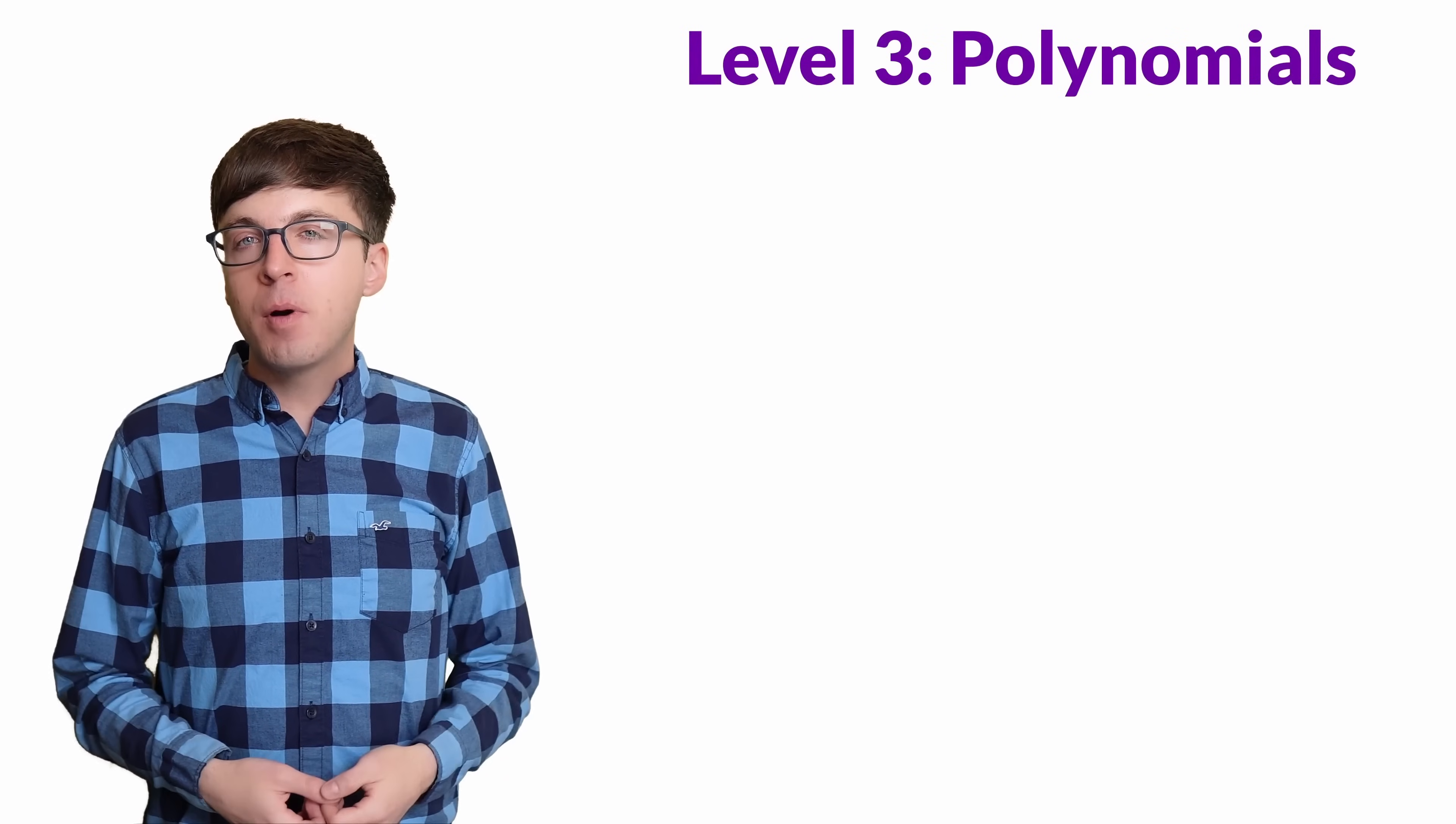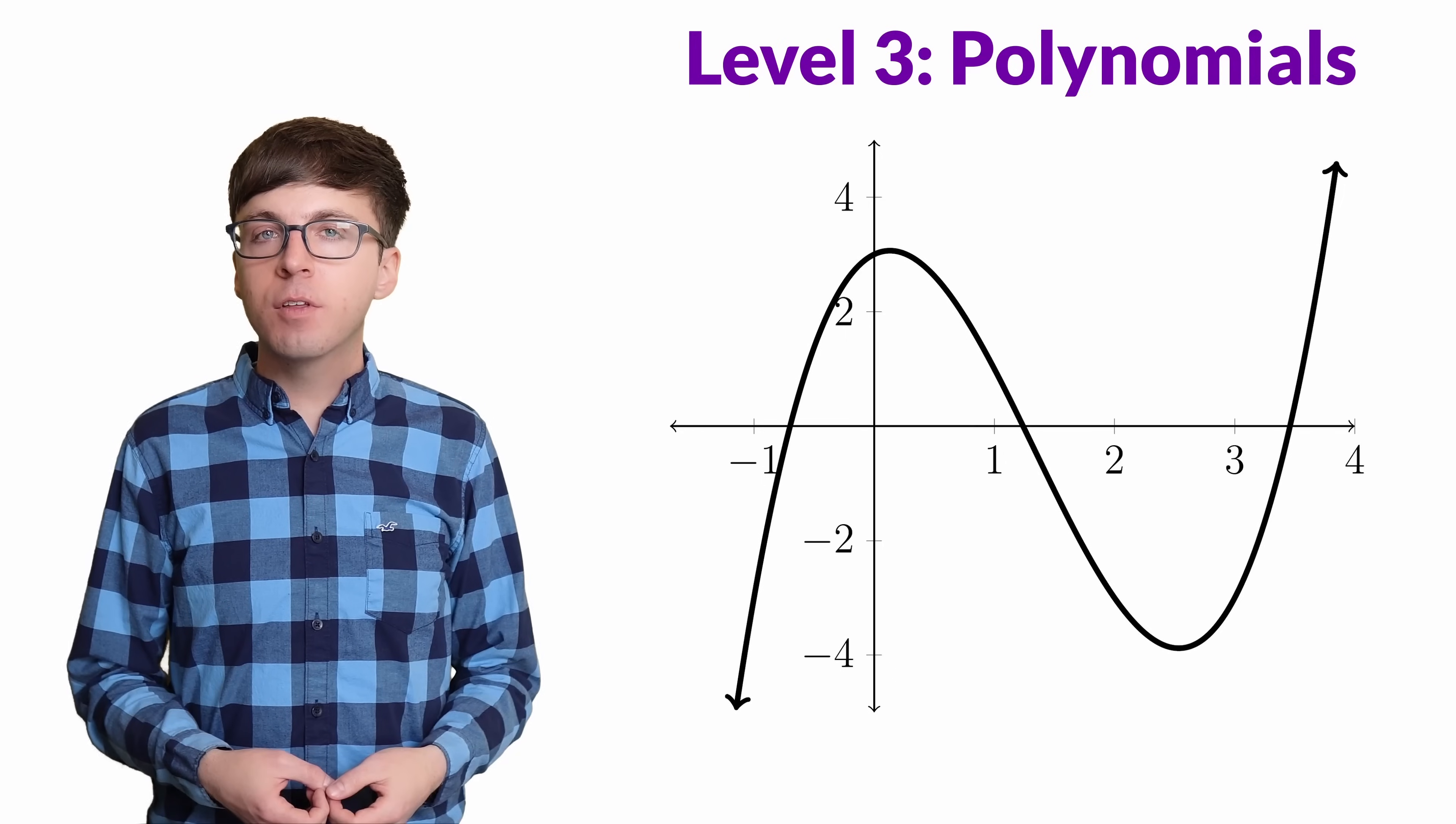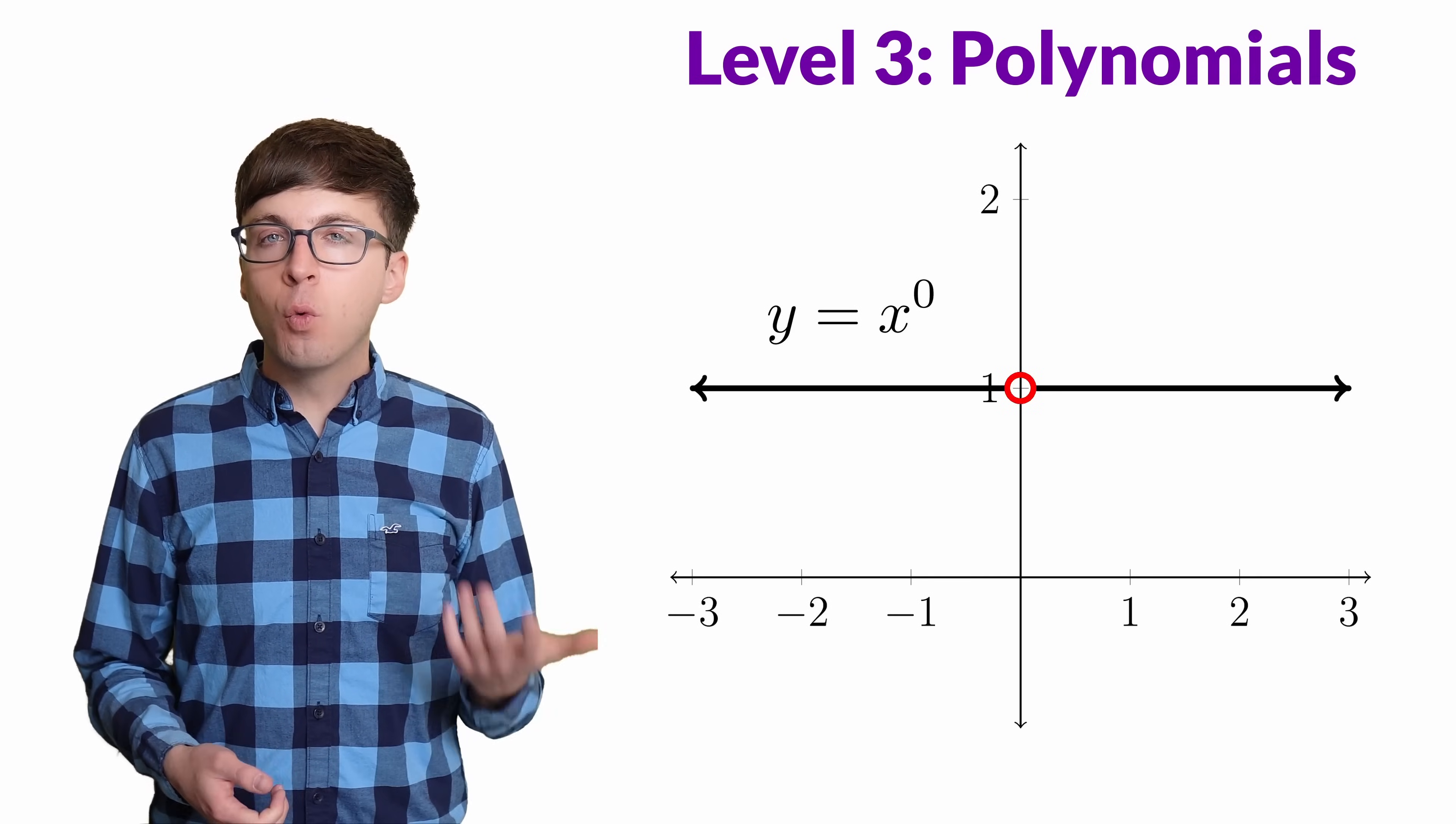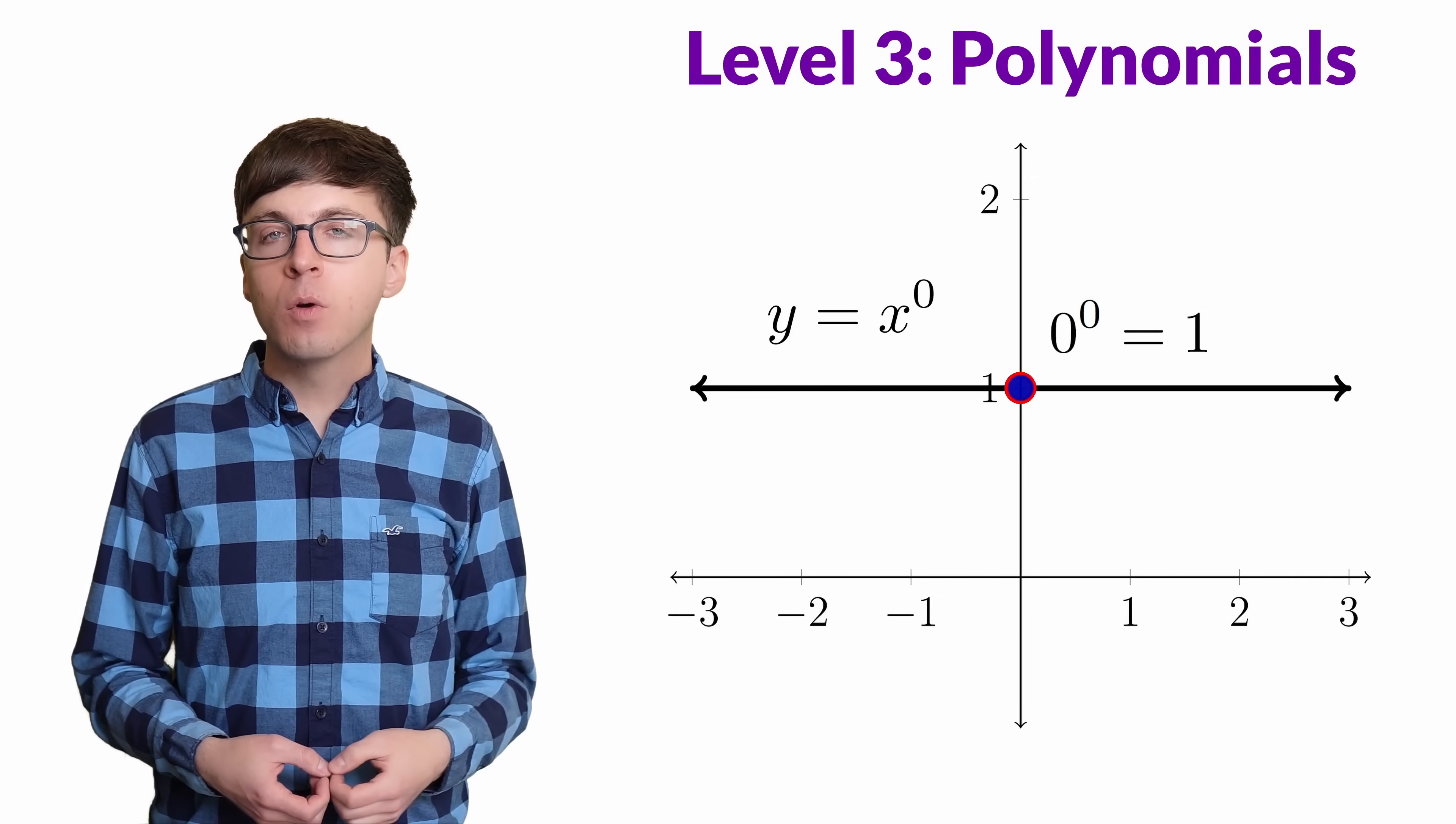For level 3, let's think about polynomials and calculus. Polynomials are continuous functions, meaning they don't have any abrupt changes like jumps or vertical asymptotes. We can draw any part of their graph in one motion without lifting our pen. x to the 0 is equal to 1 for every positive and negative value of x. So in order for x to the 0 to be a continuous polynomial, we need to define 0 to the 0 equals 1.